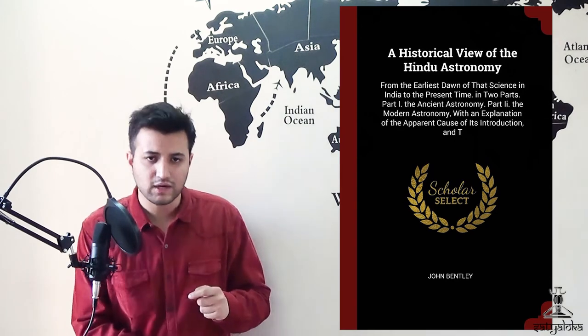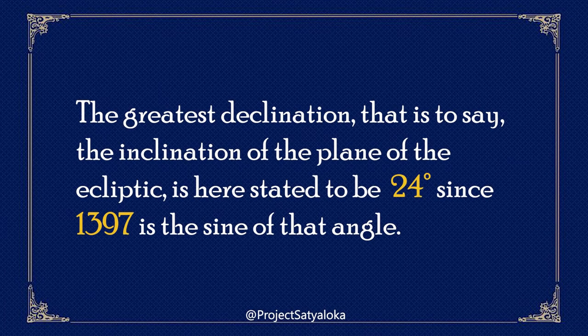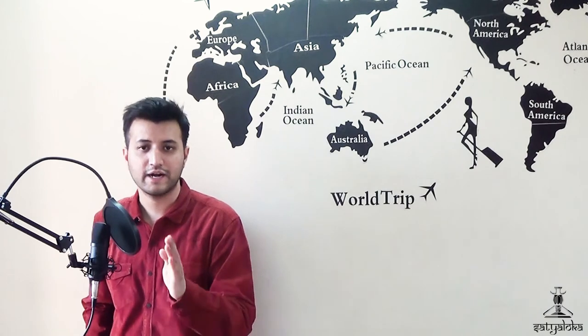Some British scholars suggested the Indians were poor observers who recorded 24 degrees where the actual tilt was much lesser. According to Mr. Bentley, the Hindu astronomers make it a rule in observing to take the nearest round numbers, rejecting fractional quantities. In 1858, the 24-degree deception was finally set in stone by Professor Dwight William Whitney and his committee, who produced the first English translation of the Surya Siddhanta. They translated the verse as: 'The greatest declination, that is the inclination of the plane of the ecliptic, is here stated to be 24 degrees since 1397 is the sine of that angle.' In this casual manner, colonial scholars managed to trivialize and hide in plain sight the most direct proof of the great antiquity of Indian astronomy — and no one bothered to verify this for the past 150 years.